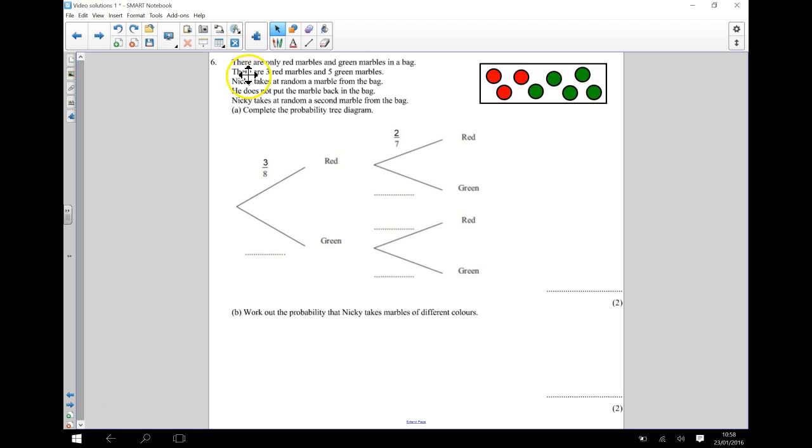In this question we have been told that there are only red marbles and green marbles in a bag. There are three red marbles and five green marbles. So I've just drawn a diagram of what's going on over here.